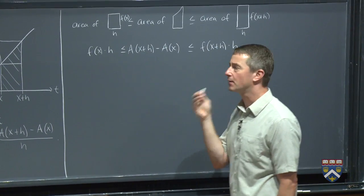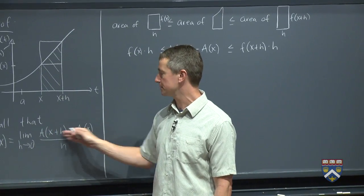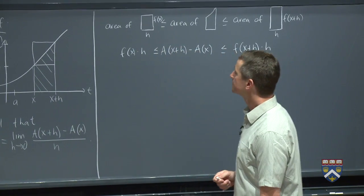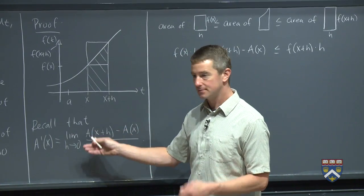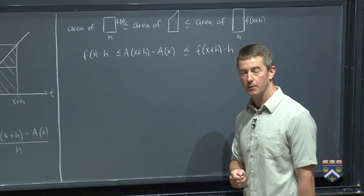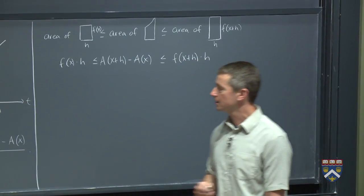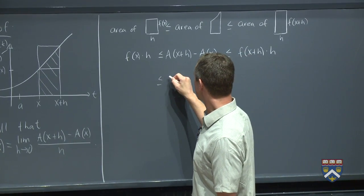Because I asked you to find a region in this picture that was equal to the top, whose area was equal to the top of this fraction. What we're trying to get is a prime of x. We're trying to get this. Limit as h goes to 0, a of x plus h minus a of x over h. The thing in the middle is almost what we want. It's just missing two things, right? First of all, it's missing an h. So I would like to divide it by h.